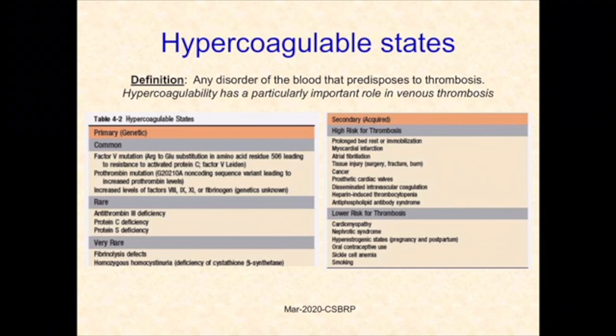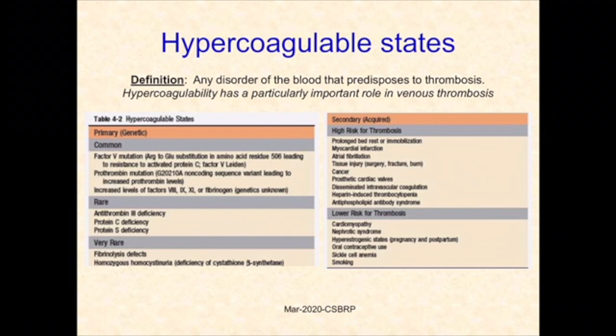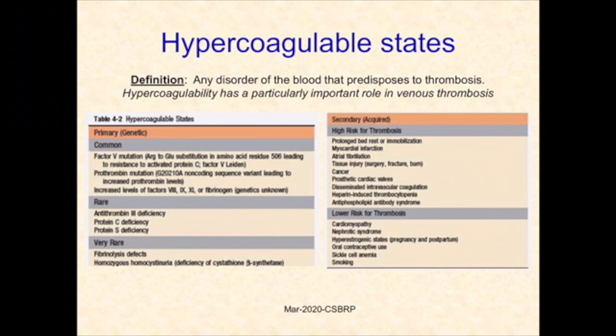Secondary causes of hypercoagulable states are numerous; most commonly encountered are bed-rested or immobilized patients, myocardial infarction, atrial fibrillation, tissue injury due to surgery, fracture, or burns, cancers especially adenocarcinomas, prosthetic cardiac valves, disseminated intravascular coagulation, heparin-induced thrombocytopenia, and antiphospholipid syndrome. Lower risk of thrombosis may be seen in nephrotic syndrome, cardiomyopathy, those using oral contraceptives, or hyperestrogenic states like pregnancy and the postpartum period. Hypercoagulable states are particularly associated with venous thrombus formation.